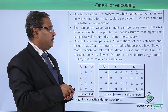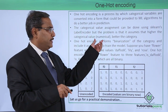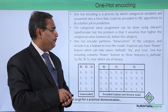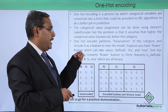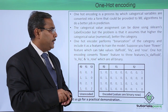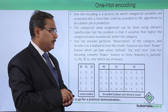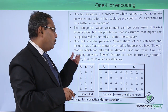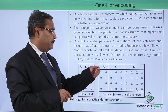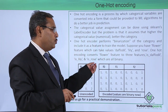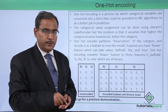The label encoder assumes the higher the categorical value the better the category. One hot encoder performs binarization of the category and includes it as a feature to train the model. For example, a flower feature with values daffodil, lily, and rose is converted to three binary features: is_daffodil, is_lily, and is_rose.